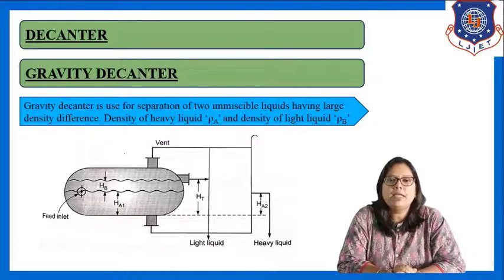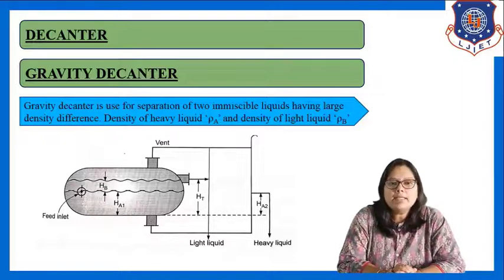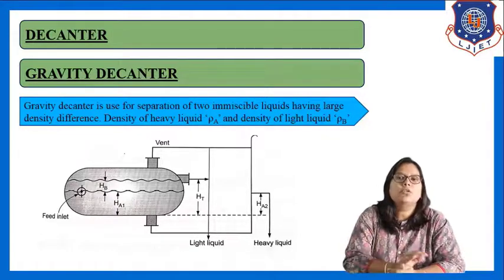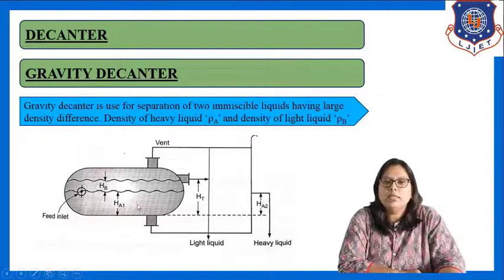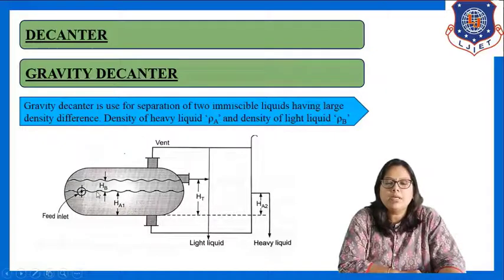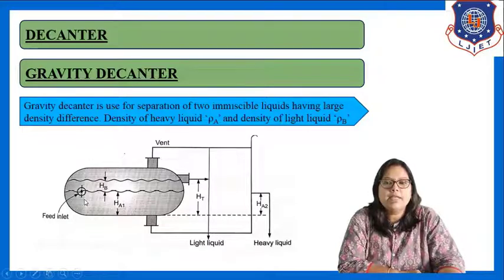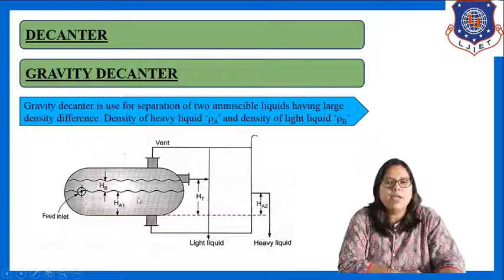Let us start with the first type of decanter, which is the gravity decanter. It is used when the density difference between the two liquids is large, so it is used for the separation of two immiscible liquids having large density difference. You can see the basic construction in this figure — this is the cylindrical shape equipment. The liquid mixture of two immiscible liquids is filled in this tank through this feed inlet. Due to the density difference, after some time two layers will be formed.